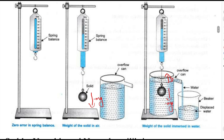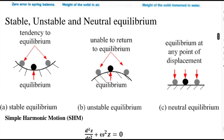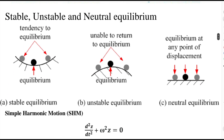Let us discuss neutral, unstable, and stable equilibrium next. Using three different surfaces and a small ball, we can explain this. Keep this ball on a concave surface. When a minor disturbance is applied, this ball oscillates for a short time from its mean position, and it will come to rest here. This equilibrium condition is known as stable equilibrium. As shown in this figure, imagine that a ball is on a convex surface. There the ball is unstable, and it will roll either left or right, never returning to its equilibrium position. This condition is referred to as unstable equilibrium.